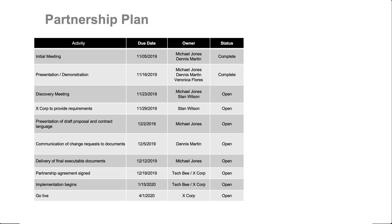Here's a tool that we call a partnership plan. At the most basic level, it's a table. The rows are the individual steps between the moment in time where you give this document, this table.